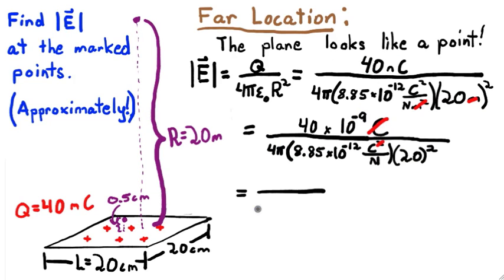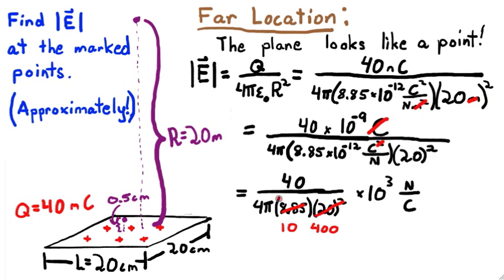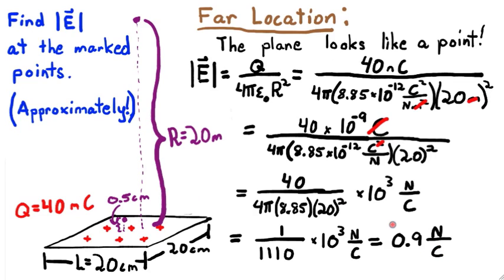Organize the powers of 10 and other factors separately, and estimate the answer. 20 squared is 400, and 8.85 is about 10. 40 over 40 is 1, and pi is about 3, making 1 over 1200 our estimate. The real answer to an appropriate number of sig figs is 1 over 1110. This almost exactly cancels the 10 to the 3 factor, giving 0.9 newtons per coulomb as our final answer. Notice that this is much, much smaller than the nearby field, as expected.